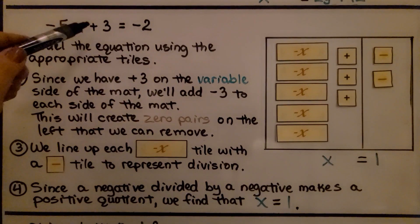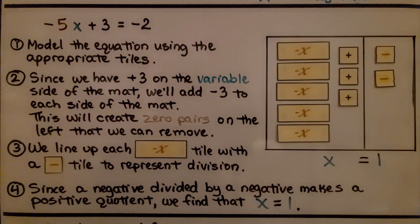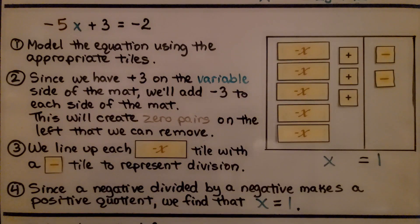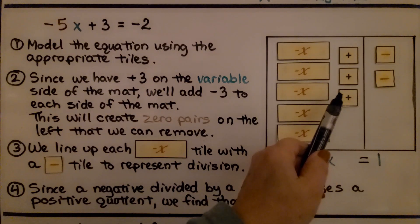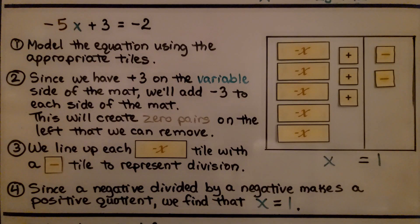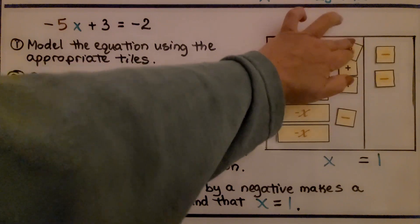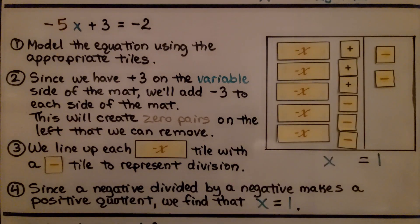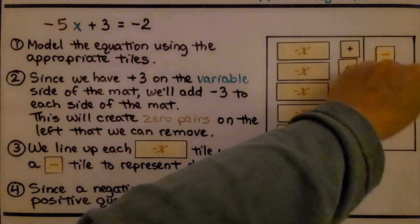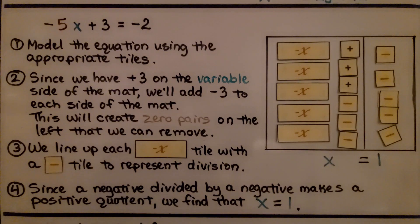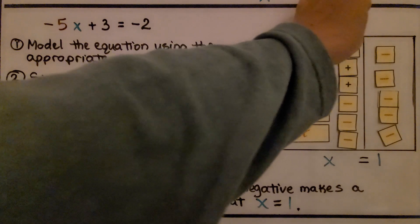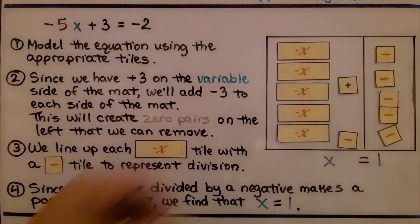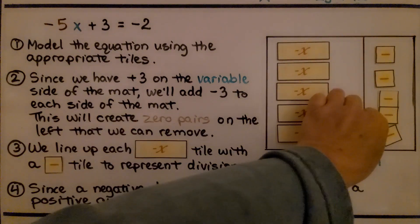Here we have negative 5x plus 3 is equal to negative 2. We model the equation using the appropriate tiles. Since we have plus 3 on the variable side, we add negative 3 to each side of the mat — negative 1, negative 2, negative 3 on the left, then 1, 2, 3 negative tiles on the right. This creates zero pairs on the left that we can remove — each pair of a plus and a minus is removed, three pairs total.